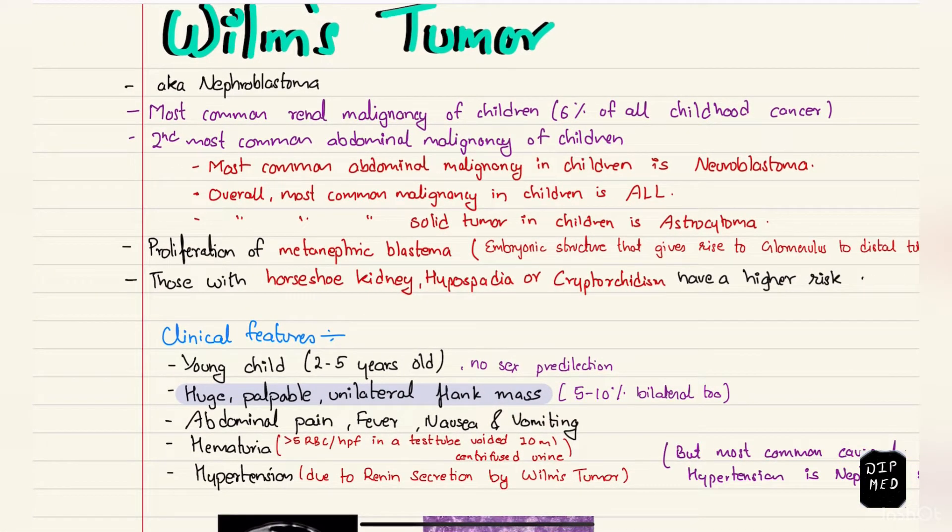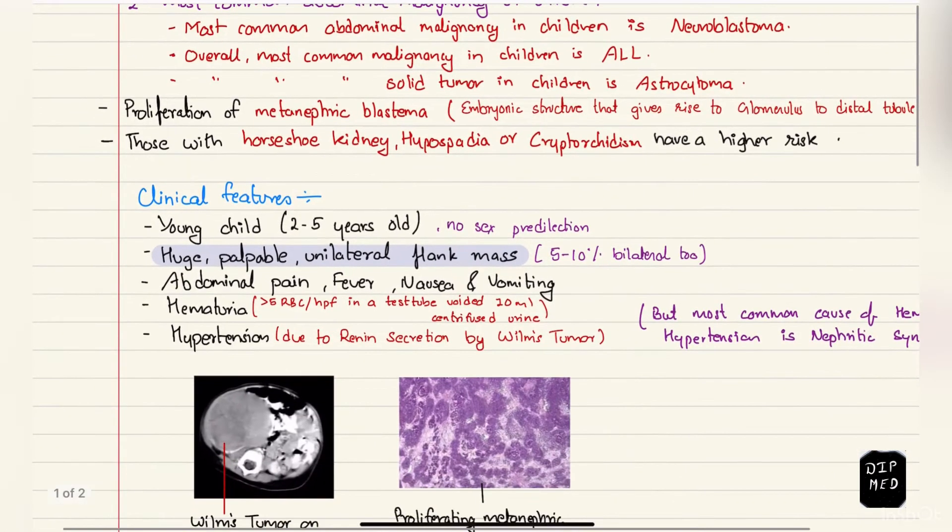Those people with conditions such as horseshoe kidney, hypospadias, or cryptorchidism are at greater risk of developing Wilms tumor. The classical case presents as a young child, usually two to five years old, and there is no sex predilection.